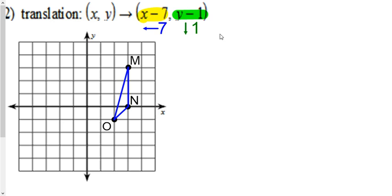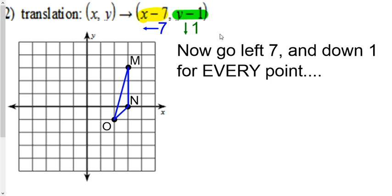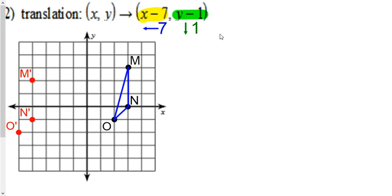So to the left 7, down 1. Take the three vertexes, the corner points, and do that. So M is going to go left 7, and then down 1. Put your new dot, label it M prime. Do the same for N. Do the same for O. Draw your new figure.